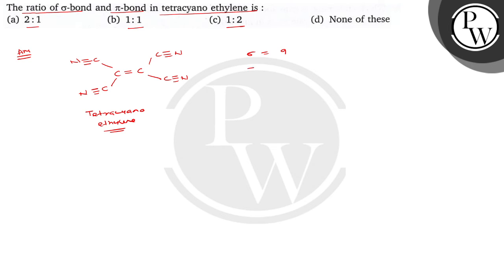There are 9 sigma bonds. And pi bonds agar hum count kareinge? It is 1, 2, 3, 4, 5, 6, 7, 8, 9. So, there are 9 pi bonds.